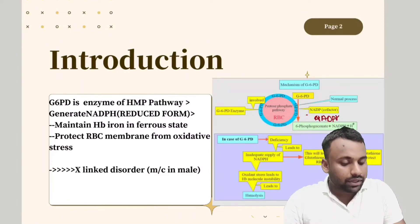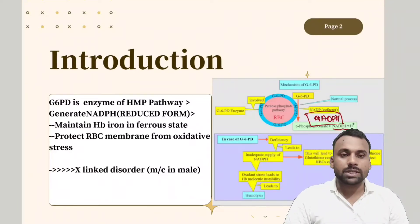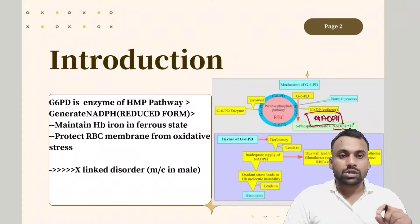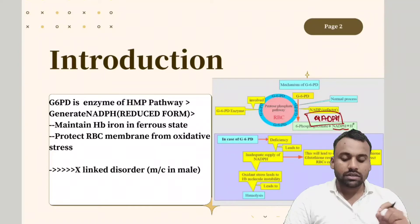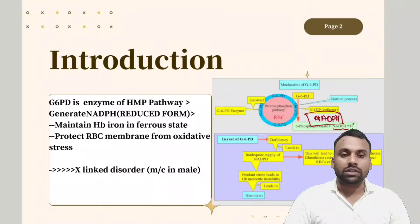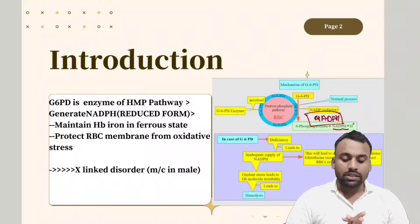NADPH is responsible mainly for the reduction of glutathione. This reduction of glutathione is important because it is responsible for protecting the RBC membrane from oxidative stress. Normally, NADPH has two main functions we can study.